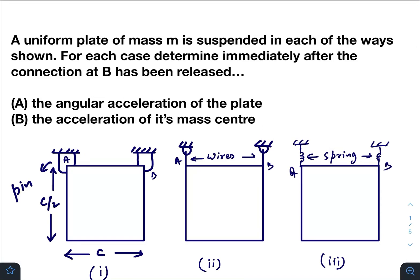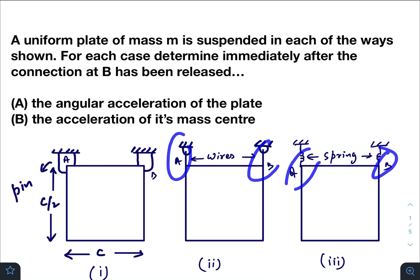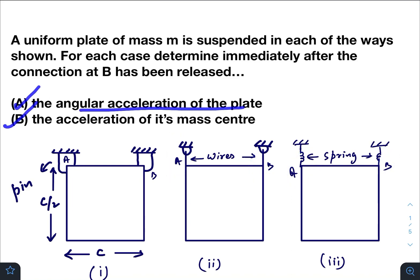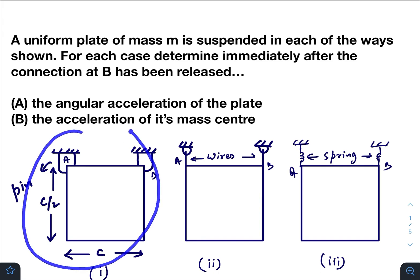Hey, what is up everyone. In today's question we have a uniform plate of mass m suspended in each of the ways shown — there are three ways. For each case, determine immediately after the connection B has been released. So just after B is released, we need to find out two things: the angular acceleration of the plate and the acceleration of its mass center.